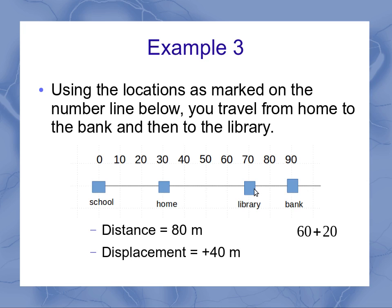My displacement, though, is just a positive 40 meters. And that's because I ended up at a final position of the library, which is at 70 meters. And I started at home, which is 30 meters. So displacement only cares about where you ended up compared to where you started, your final position minus your initial position. It doesn't matter the path you took in between there.